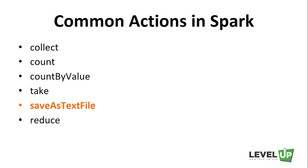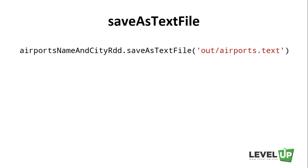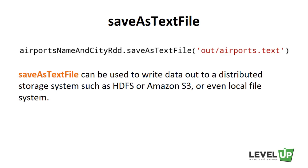The next action is saveAsTextFile. SaveAsTextFile can be used to write data out to a distributed storage system such as HDFS, Amazon S3, or even the local file system. We have already seen the usage of saveAsTextFile in many of our previous examples.